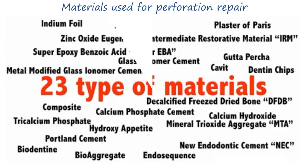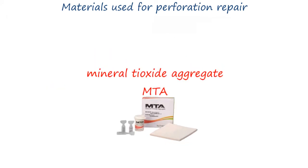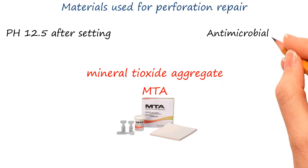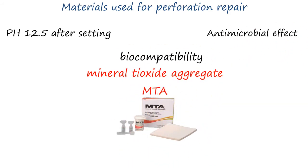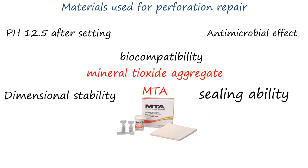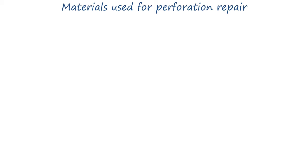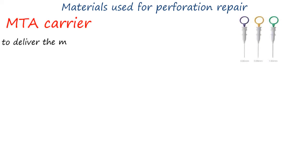Many materials have been used for perforation repair. Nowadays we use mineral trioxide aggregate (MTA), which has many advantages including high pH after setting, antimicrobial effect, biocompatibility, dimensional stability, superior sealing ability, and is hydrophilic — it sets in the presence of moisture. For application of MTA, you need an MTA carrier to deliver the material into the site of perforation.